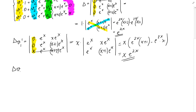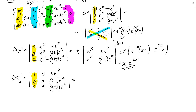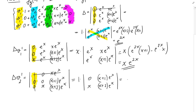To calculate delta_V2', we replace the second column of delta with the right-hand side, so the matrix has 1, 0, 0 in the first column; 0, 0, x in the second; and x e^x, (x+1)e^x, (x+2)e^x in the third. Expanding by the first column, we get 1 times the 2×2 determinant with entries 0, x, (x+1)e^x, (x+2)e^x, which equals negative x(x+1)e^x. So delta_V2' equals negative x(x+1)e^x.